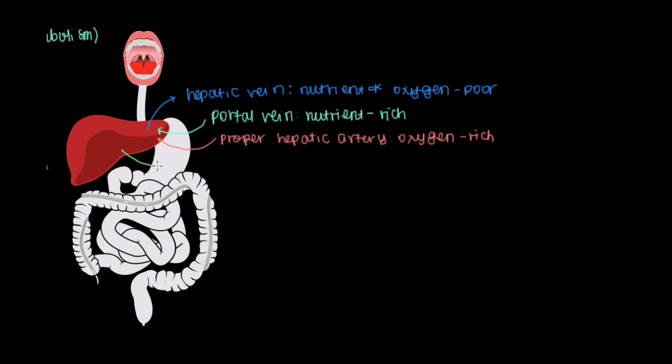The other output of the liver that I guess I should mention right now, we'll talk about in more detail in a separate video, is bile. And bile mainly leaves the liver through what's called the common hepatic duct, that will take bile.